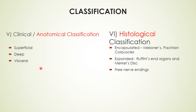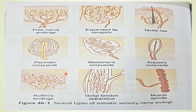A fifth classification is based on anatomical location — receptors may be superficial, deep, or in the viscera. A histological classification categorizes them as encapsulated, expanded, or free nerve endings. Most receptors are free nerve endings. Encapsulated receptors are surrounded by fibrous tissue — examples include Meissner's corpuscles and Pacinian corpuscles. Expanded types include Ruffini's endings and Merkel's disc.